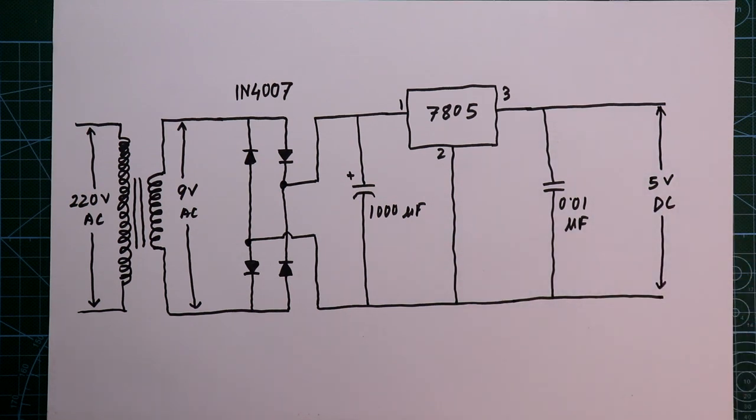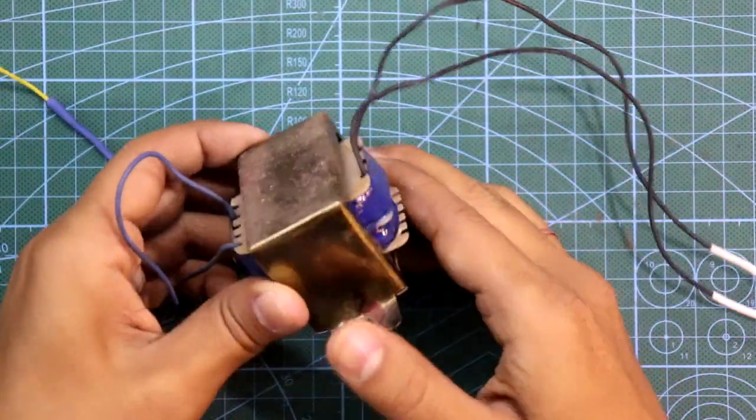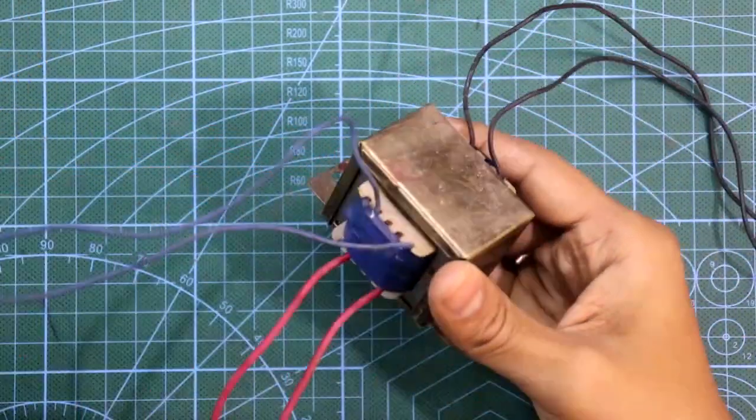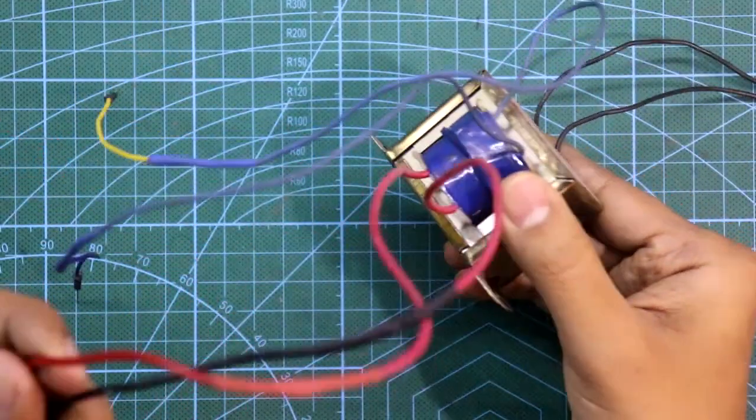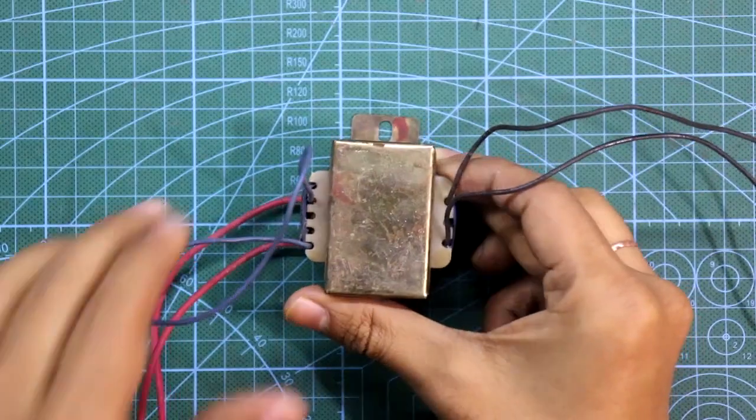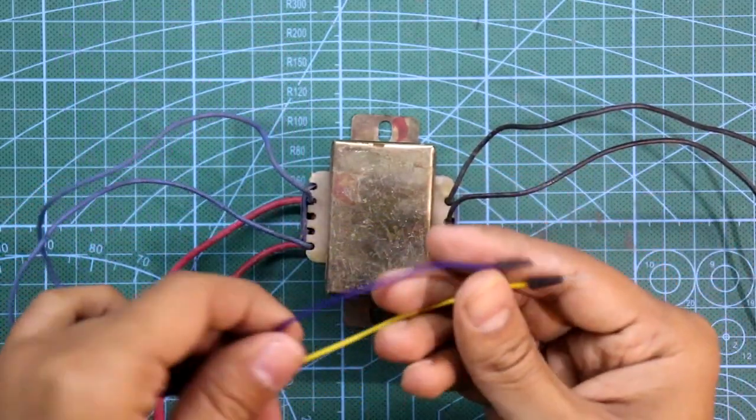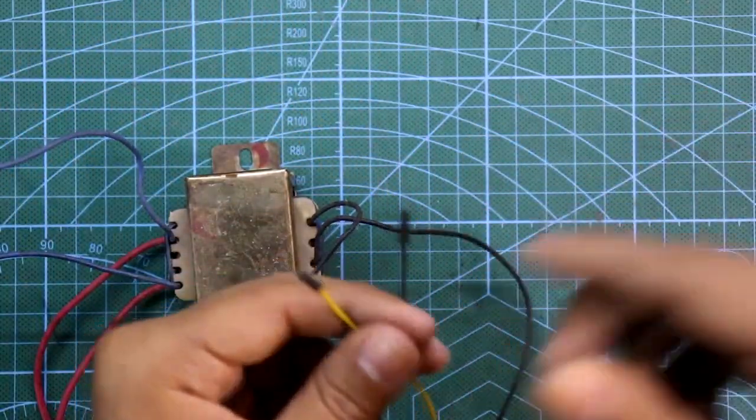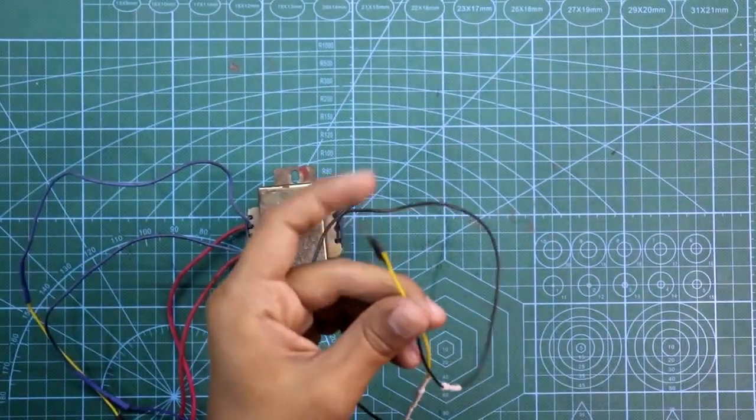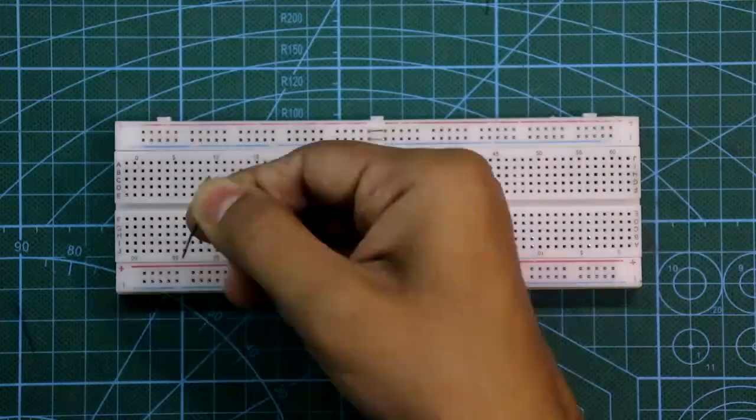I'm going to use this transformer and it is 2 ampere. This is the input 220 volt AC and it has two outputs. This output gives us 24 volts and this output gives us 12 volts. I'm going to use this output for our circuit.